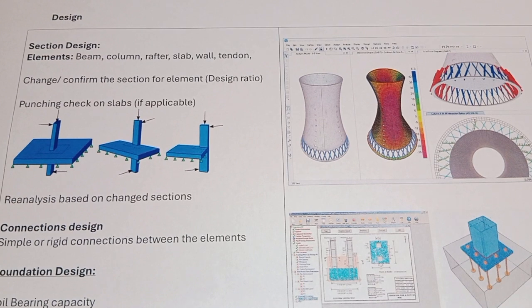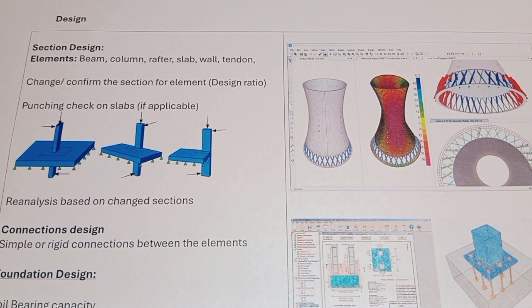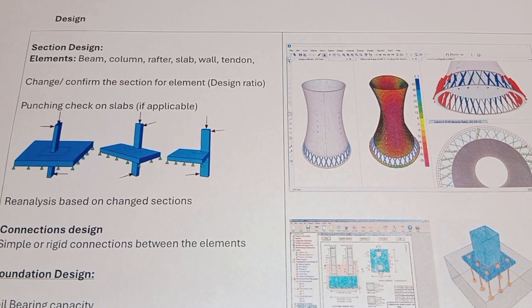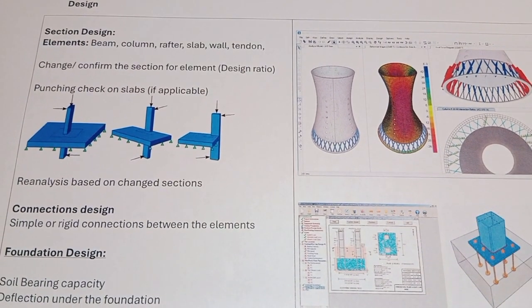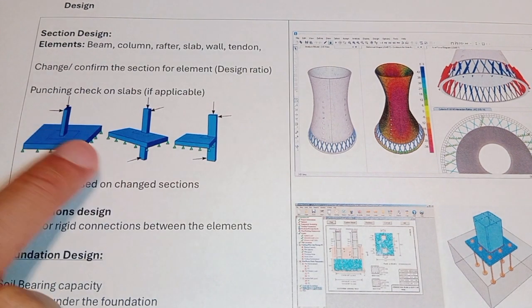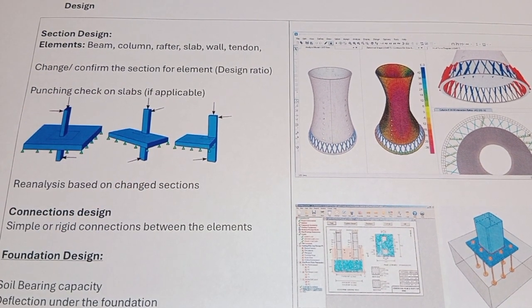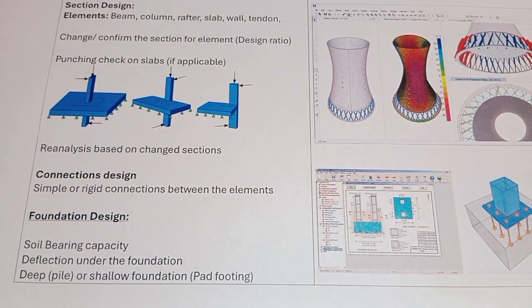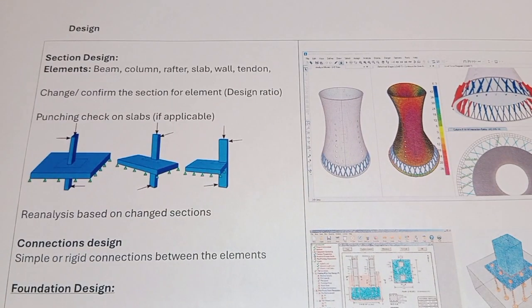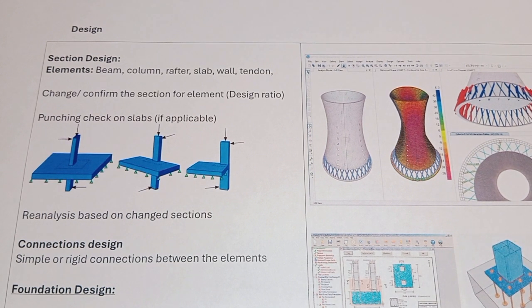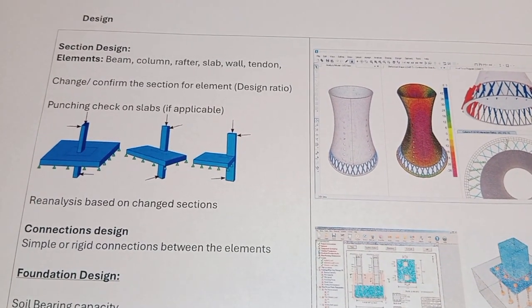In the design stage, we need to make sure that the assigned section is capable of taking the applied loads and combinations. We also need to check for punching on slabs, mainly for elevated slabs, considering mid-column, edge-column, and corner-column cases. The concept is the same but calculations differ based on the tributary area of slab around the column.